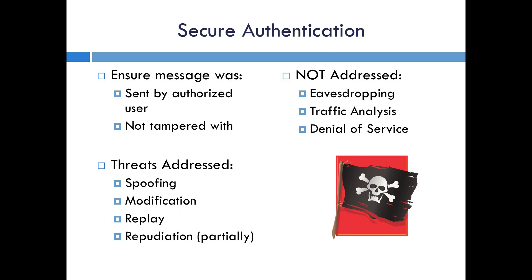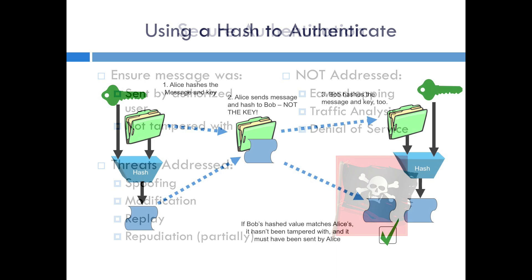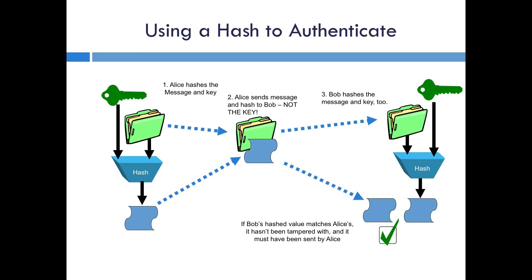What's included in secure authentication is the capability to do authentication at the application level and to address threats like spoofing, modification, and replay. The secure authentication mechanism is based on the concept of a cryptographic hash. A hash is a function like a cyclic redundancy check, or CRC, or a checksum that when performed on the message produces a much smaller string of numbers. This smaller hash value is very sensitive to changes in the message, but it's virtually impossible to determine the original message if all you have is the hash value.